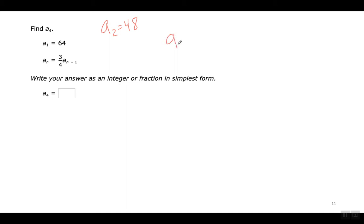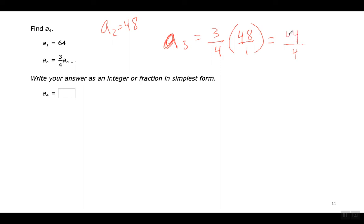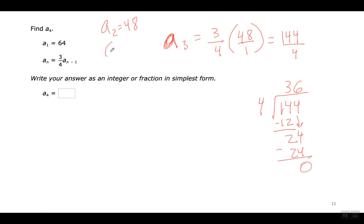Now to get the third term, I've got to multiply 3 over 4 times the second term, which is 48. Para coger el tercer término, tengo que multiplicar 3 sobre 4 por 48. Change 48 to a fraction by putting a 1 on the bottom: 4 times 1 is 4; 3 times 48 is 144. Now divide 144 by 4: 4 goes into 14 three times; 3 times 4 is 12; remainder 2; bring down the 4. 4 goes into 24 six times; 6 times 4 is 24; remainder 0. So the third term is 36.